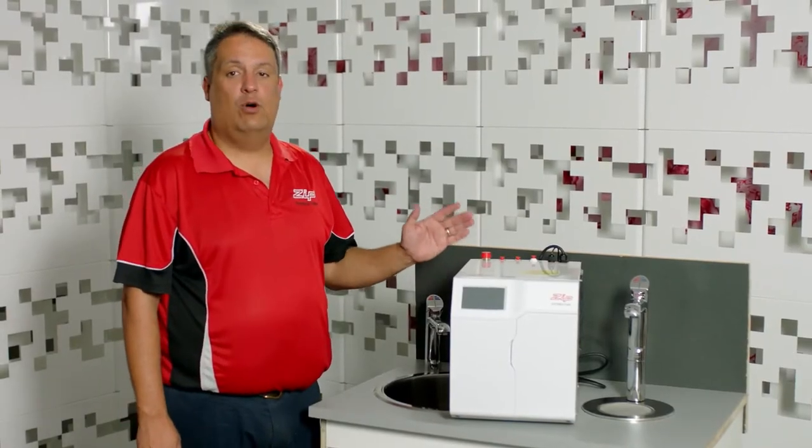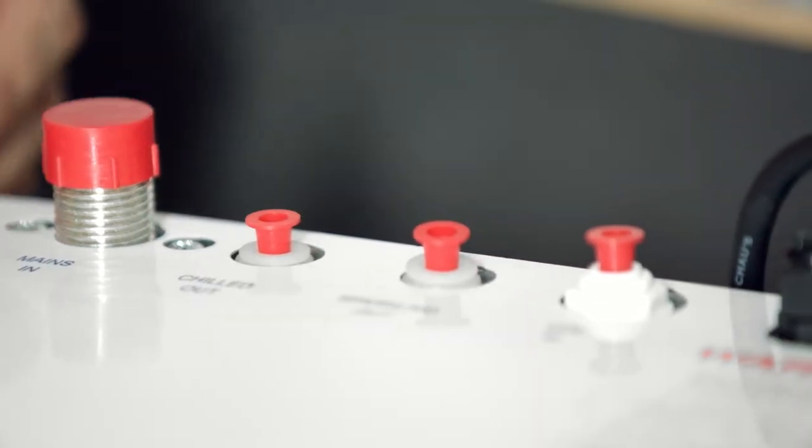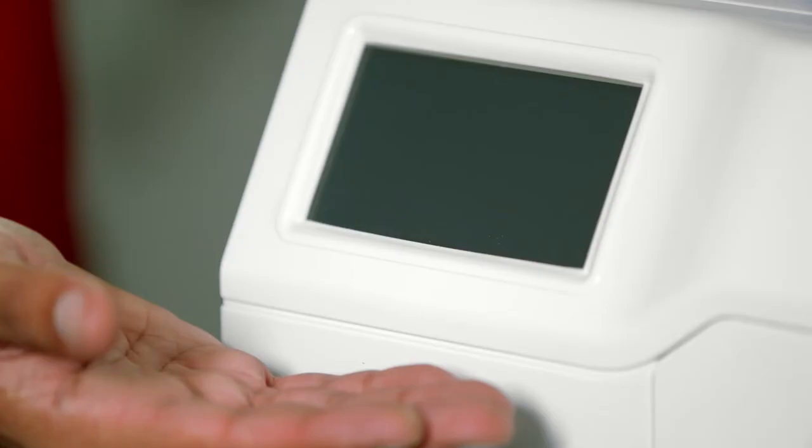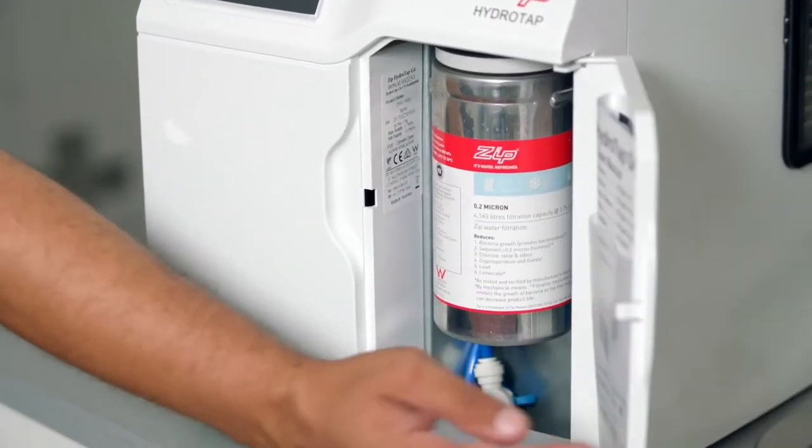This is the command center for the G4 HydroTap Chilled Sparkling. We have all our water connections at the top of the unit, an LCD to control the unit, and a filter door where the filter is housed.